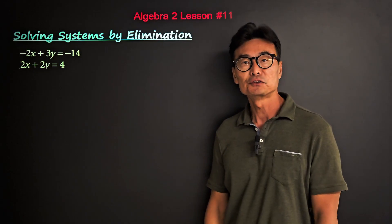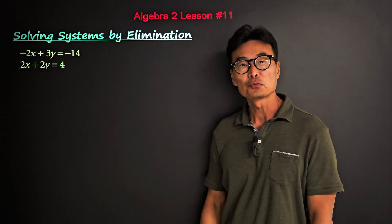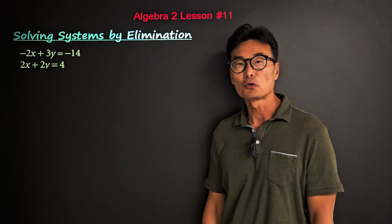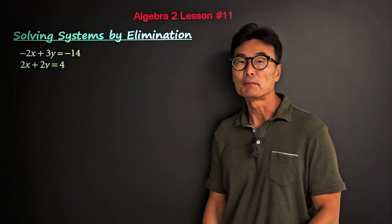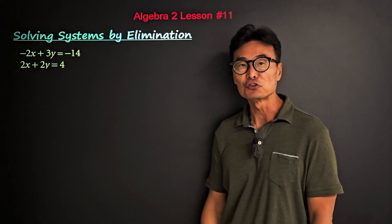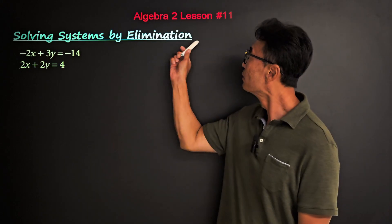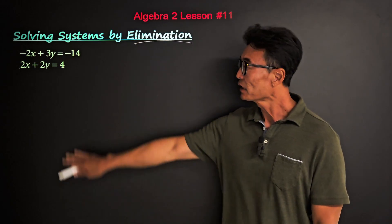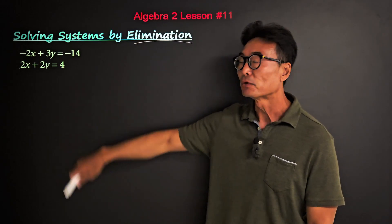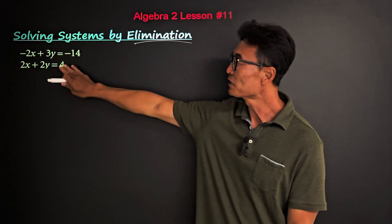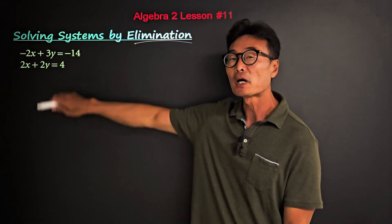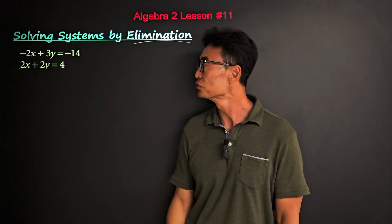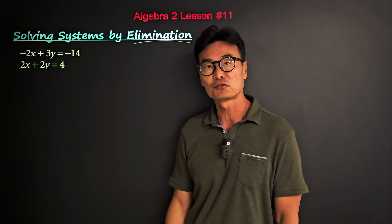When solving for two variables with two equations, the most popular and best way is using the elimination method. Take a look at this example: we're given negative 2x plus 3y equals negative 14, and 2x plus 2y equals 4.